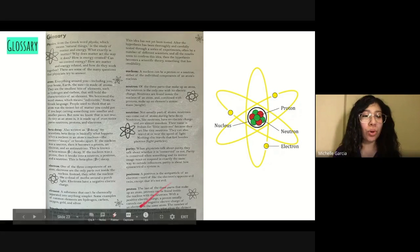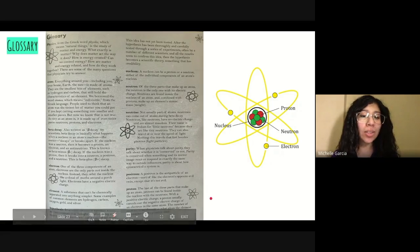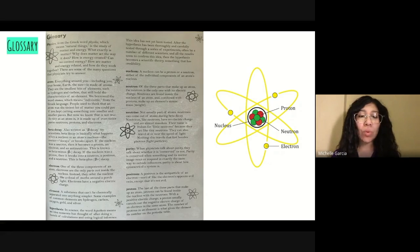Now over to proton. The last of the three parts that make up an atom, protons can be found inside the nucleus with the neutrons. With a positive electric charge, a proton usually cancels out the negative electric charge of an electron in the same atom. The number of protons in an element is what gives the element its number on the periodic table.